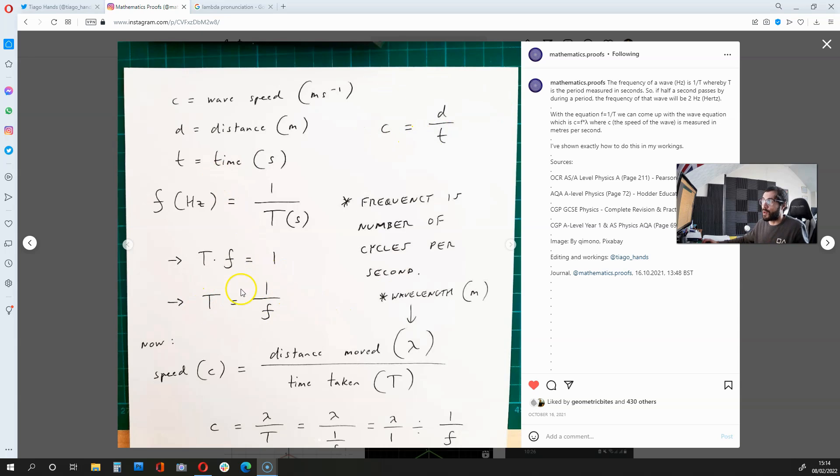With this equation up here, and also this t equation over here, we can now get c equals frequency times lambda.